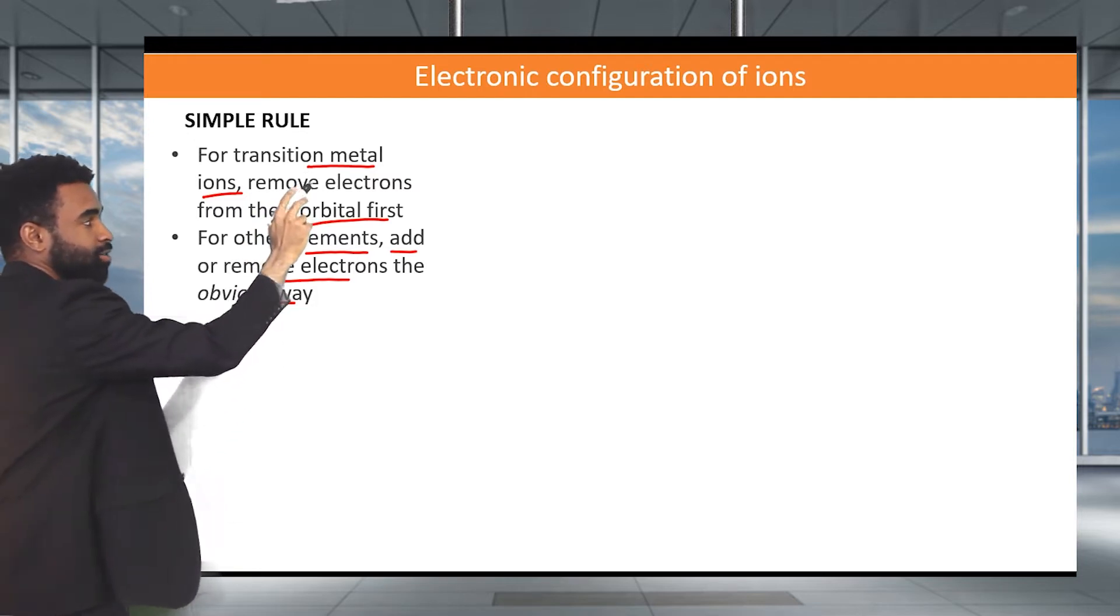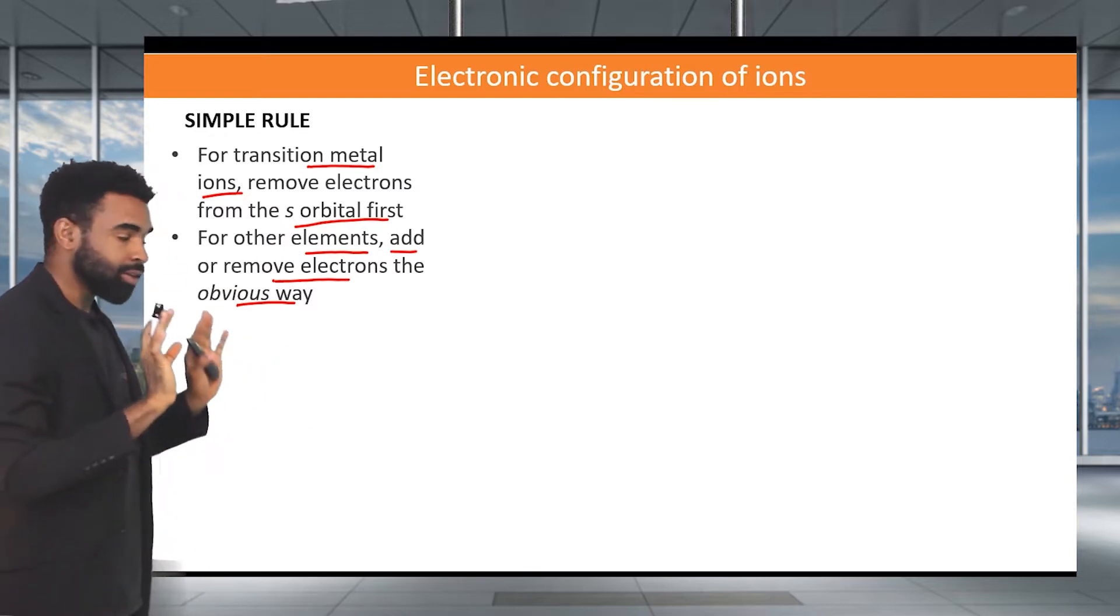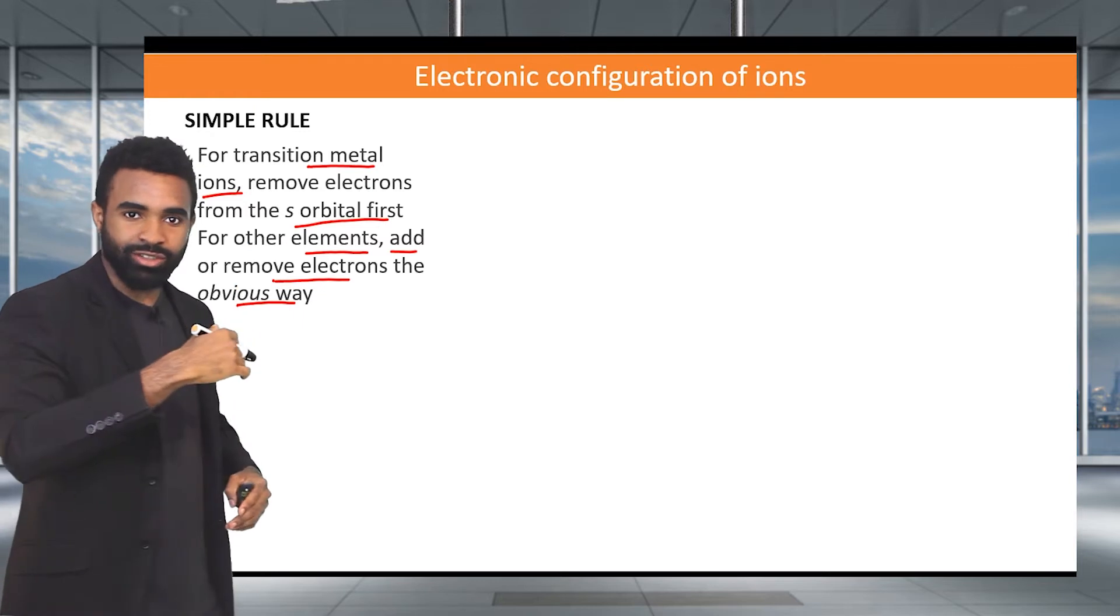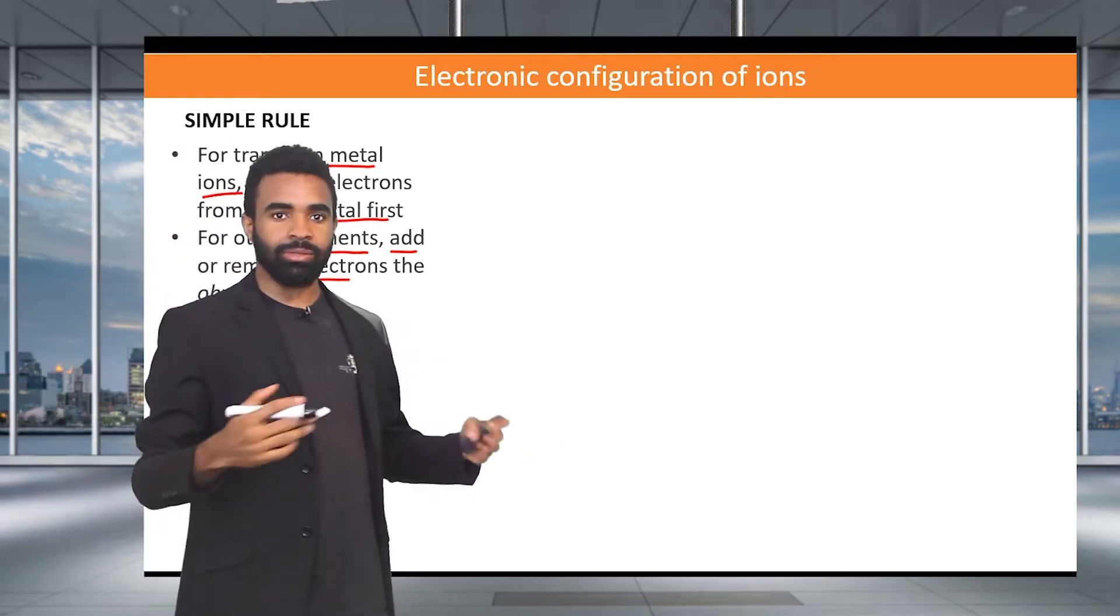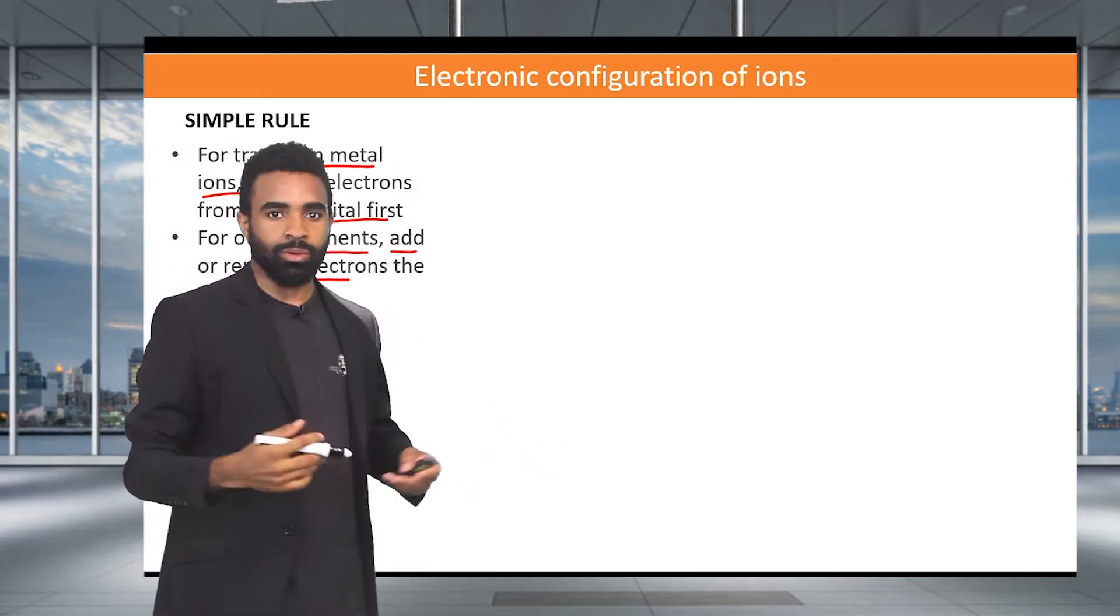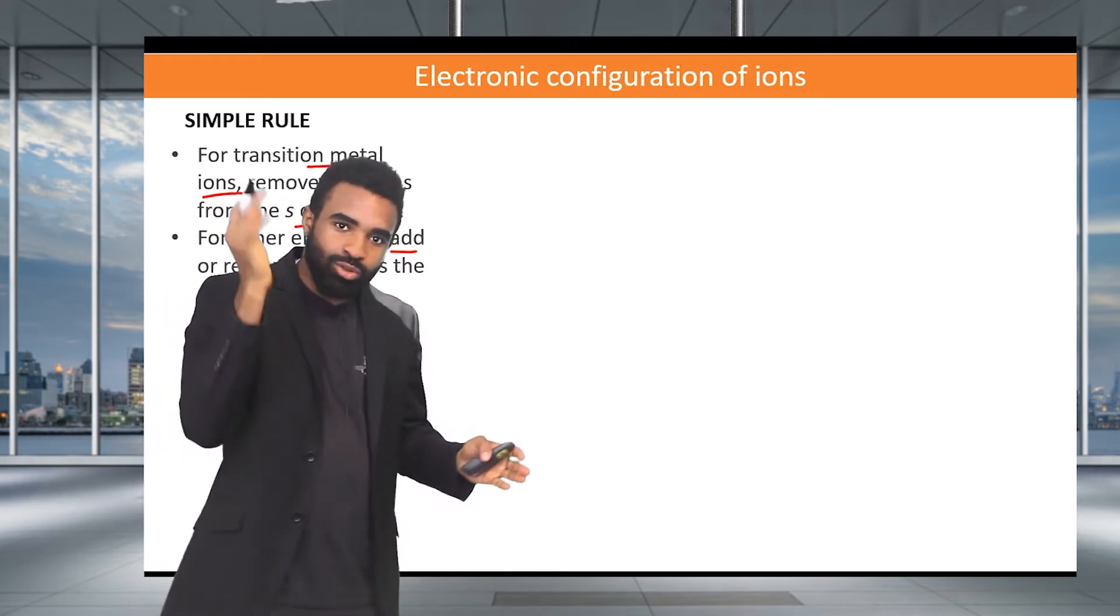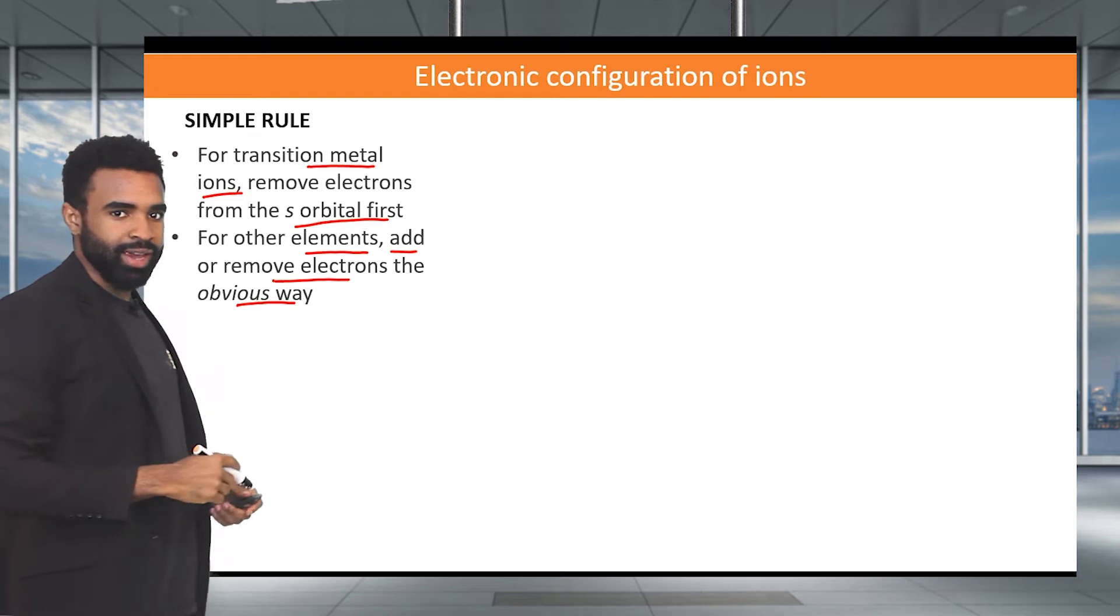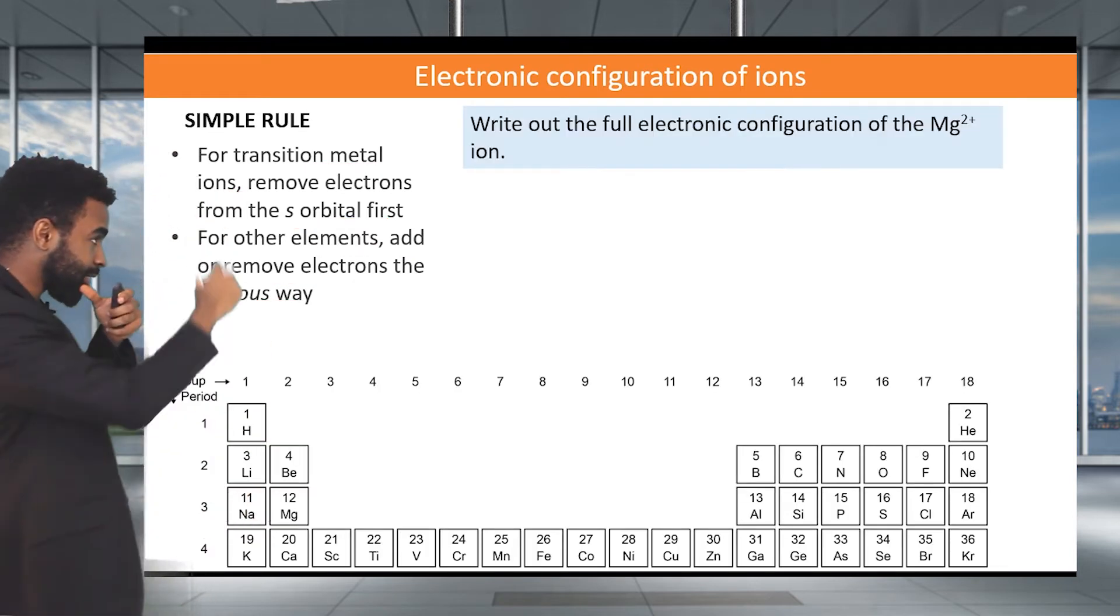But for transition metal ions, we remove from the s orbital first. Transition metal ions usually will not be gaining electrons because metals don't gain electrons. Metals lose electrons, that's what makes them metals. That's why electricity conducts through metals because the metals don't care about their electrons and the electrons move away from them. So let's get started with an example and try and apply these principles.